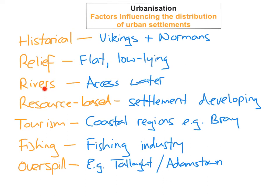So these are just some of the factors that have influenced the distribution of urban settlements, and why urban areas have developed where they actually have. It's really important that you know these for your Junior Certificate examination, for this chapter of urbanisation, but also for the chapter of settlements. You might also be asked on your OS map why a particular area has developed where it has.